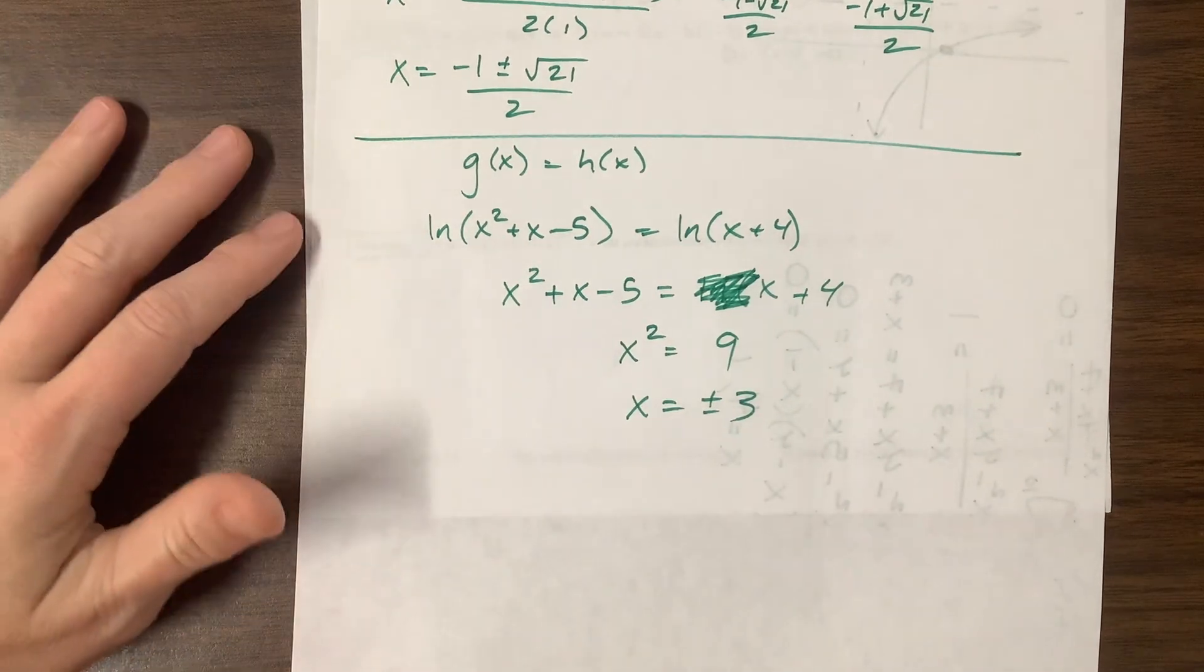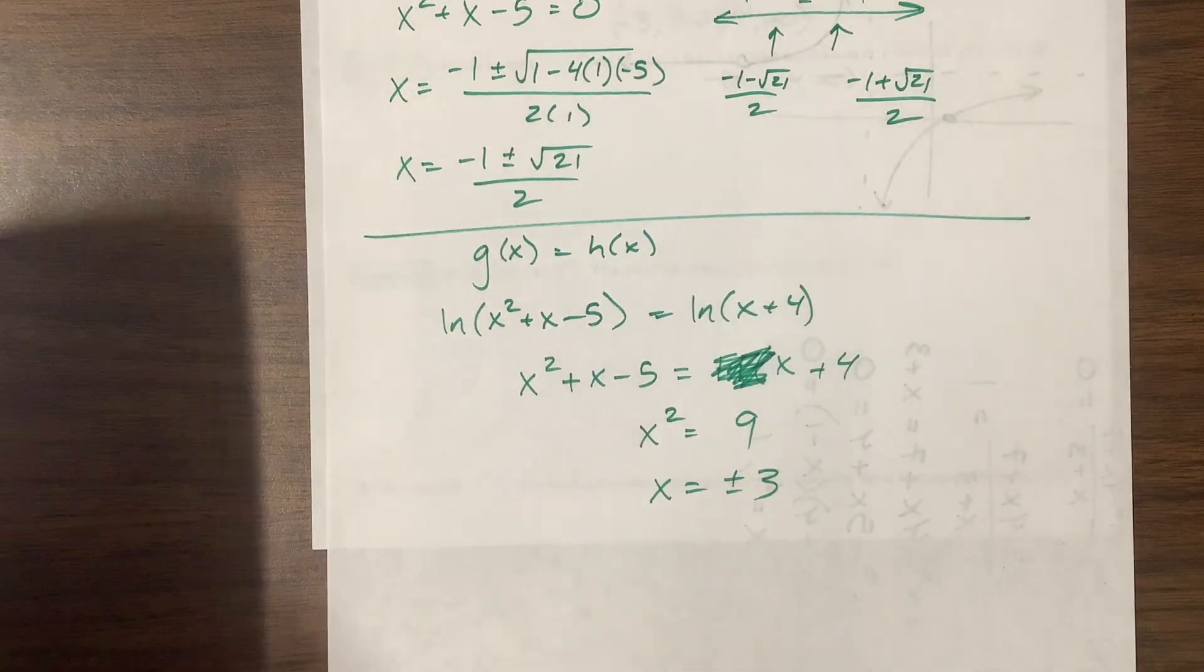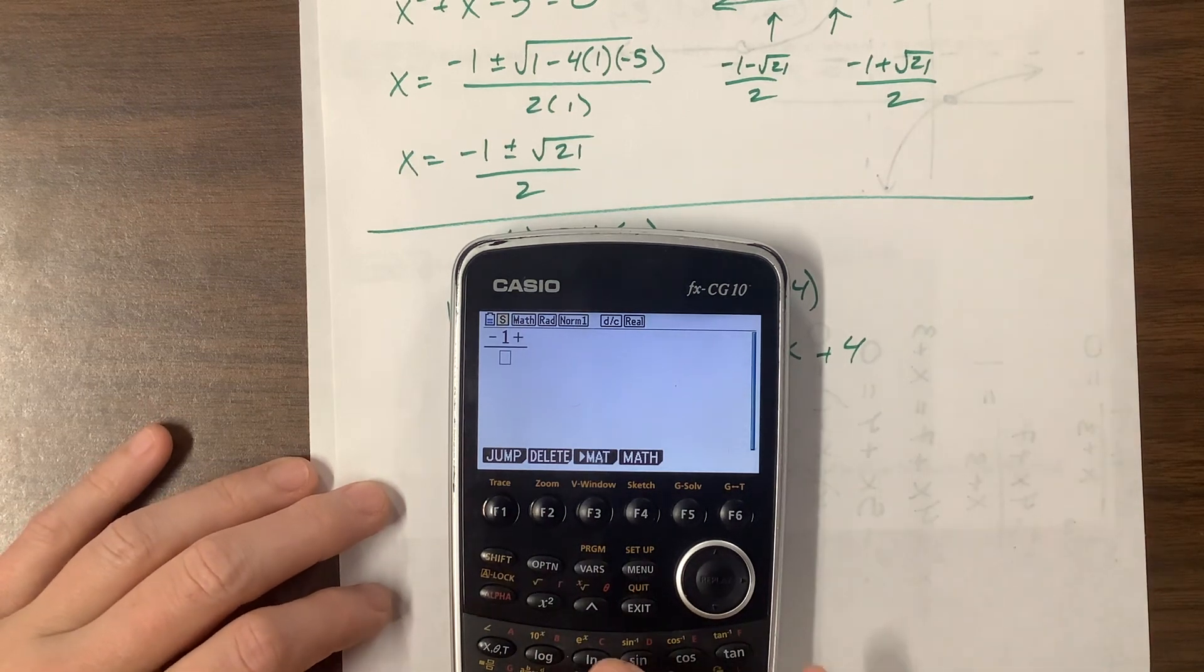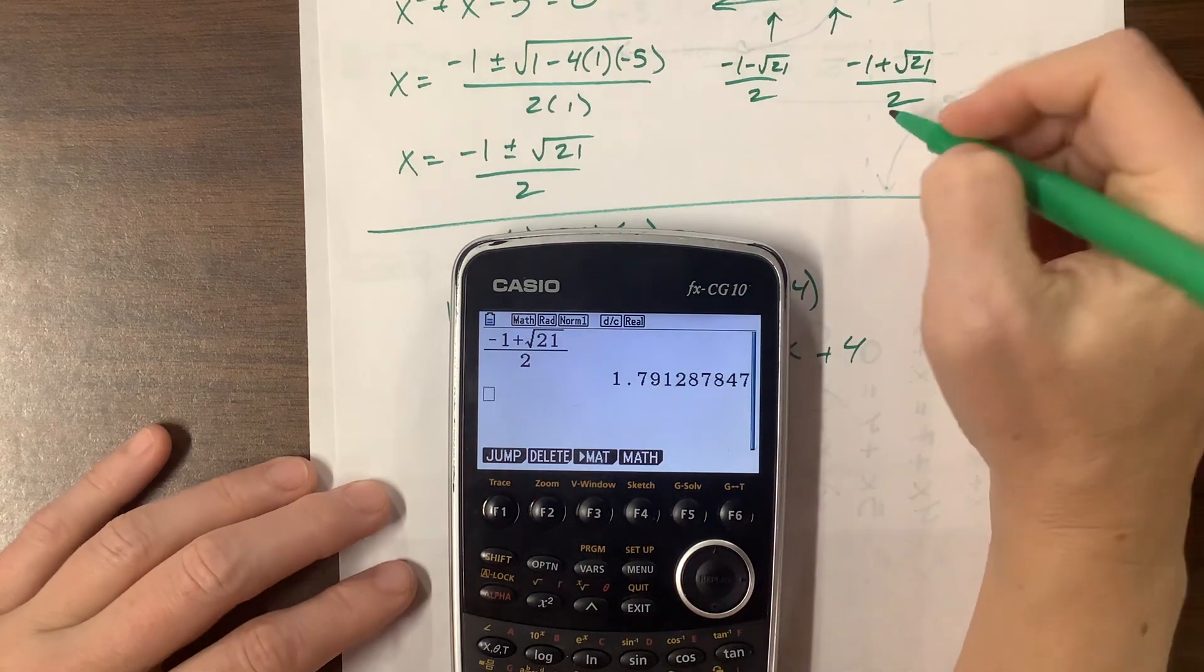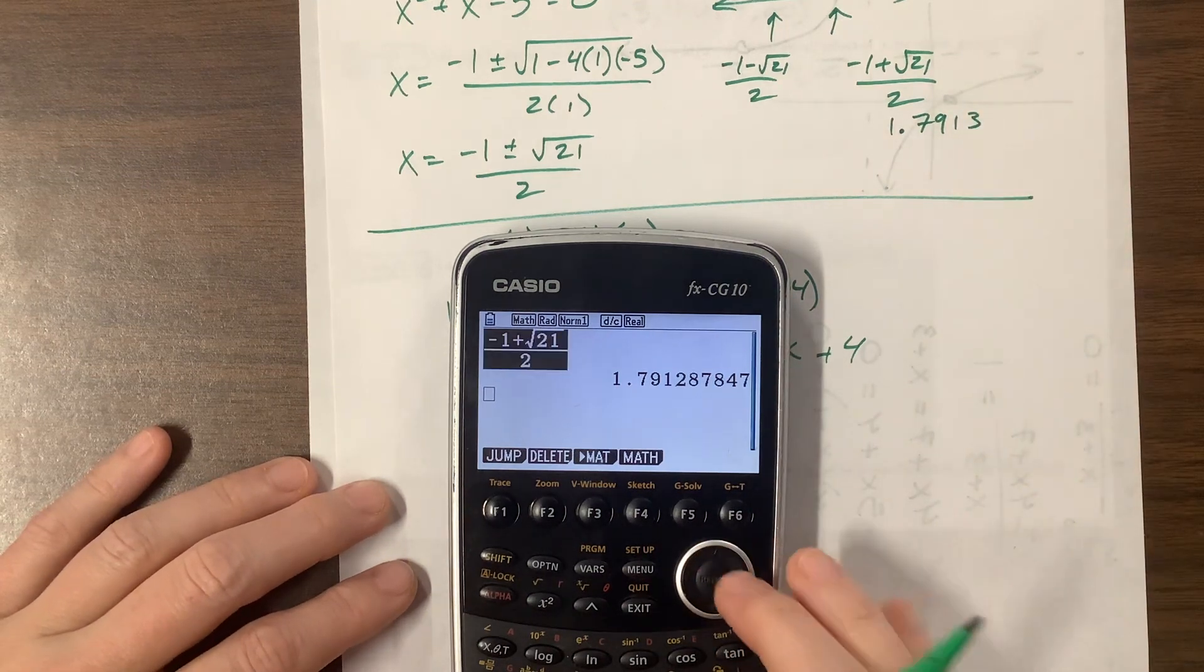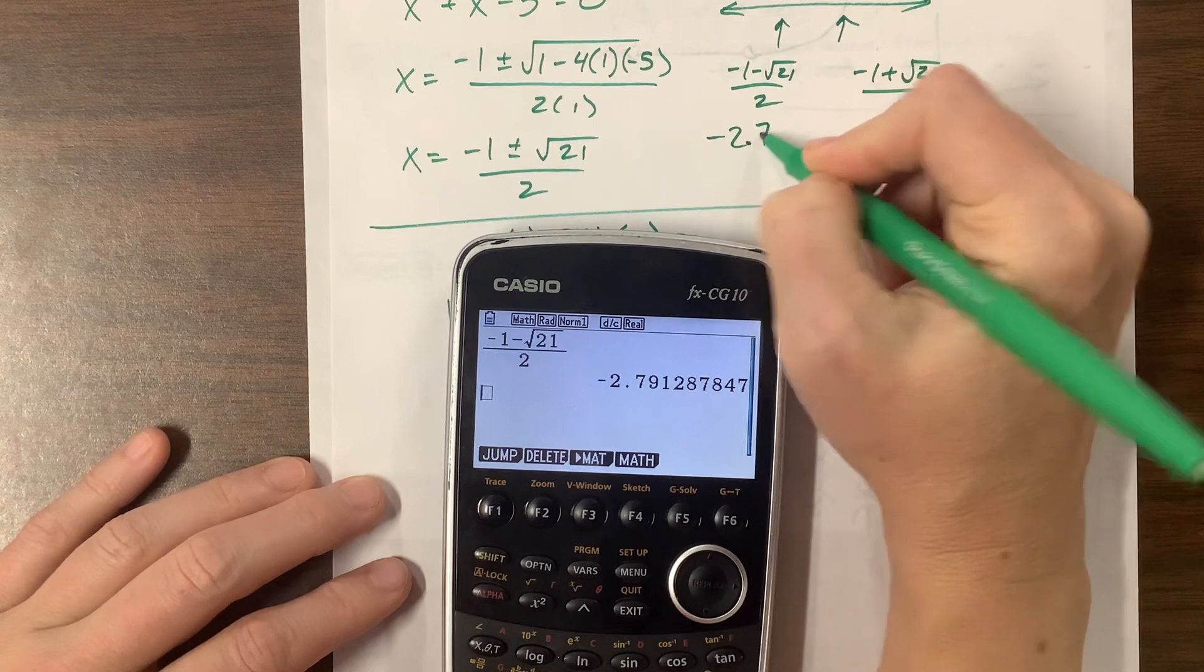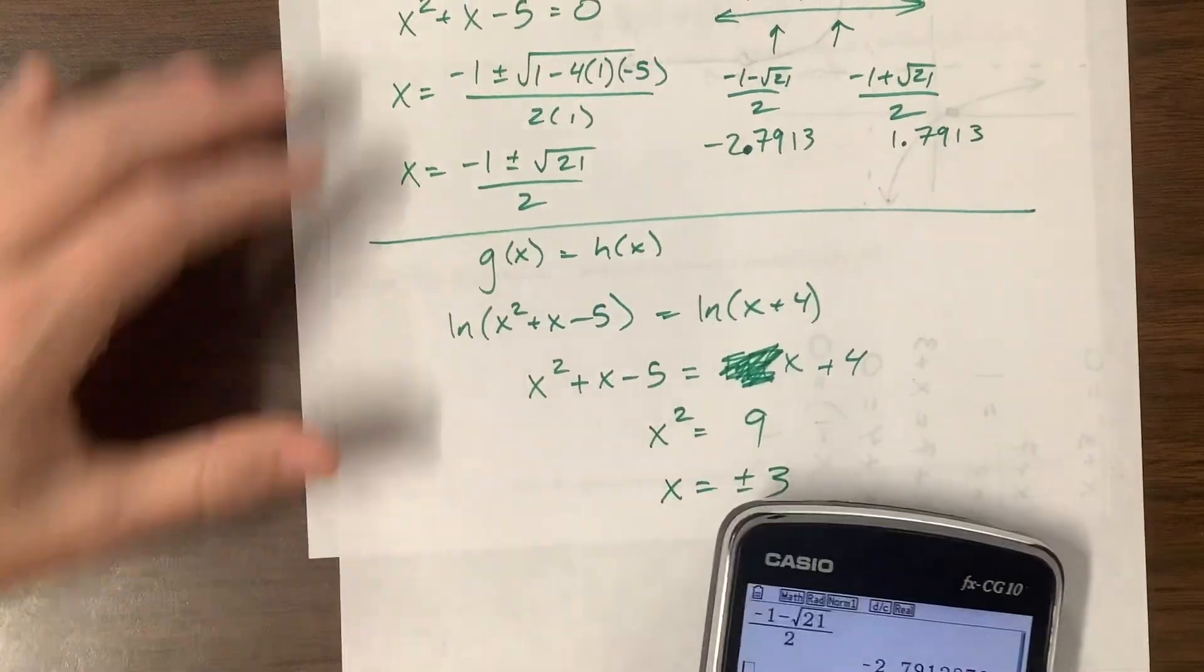Now I want to consider all of these different components and I might need to grab my calculator just to make my life a little easier and figure out what negative 1 plus root 21 over 2 is. This is about 1.7913. And then if I need it to be a minus, this is negative 2.7913. Let's take all those things into consideration.